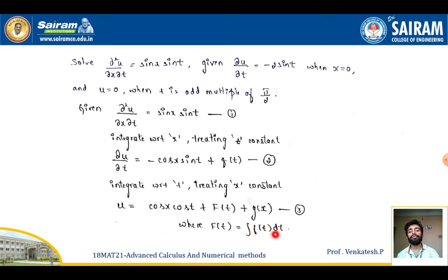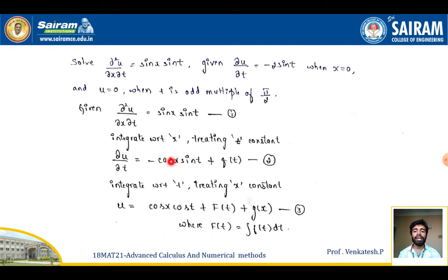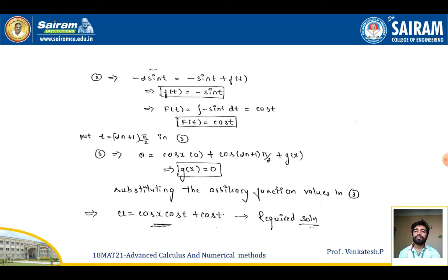Now we use the conditions to find F(t) and g(x). Replacing ∂u/∂t = −2sint when x = 0 in the expression for ∂u/∂t: cos(0) = 1, so −sint + f(t) = −2sint. Shifting −sint to the other side gives f(t) = −sint.